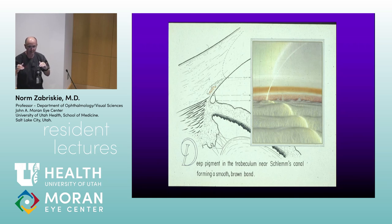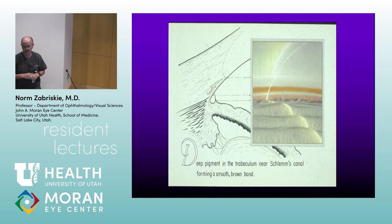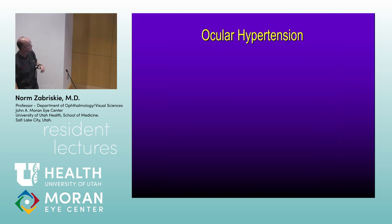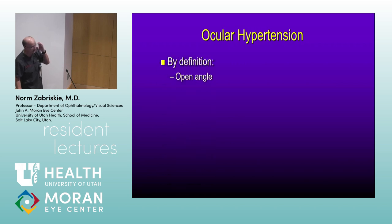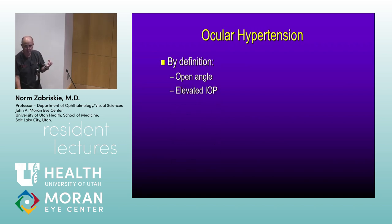The way you get good at gonioscopy is just going on a lot of people. Whenever there's any question about glaucoma, break out your gonio lens and practice. Ask your faculty to corroborate what you're looking at. Now, ocular hypertension — by definition it has an open angle. Anything with high pressure in a closed or narrow angle moves into a different category. Ocular hypertension has an elevated pressure — when do you start calling it too high?